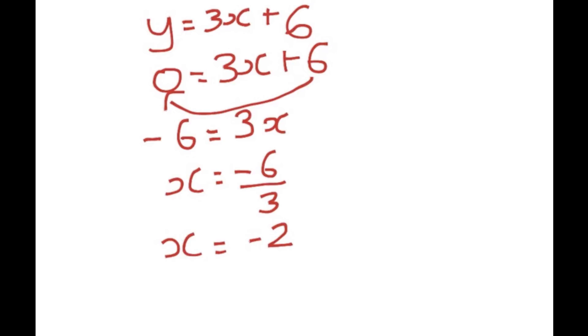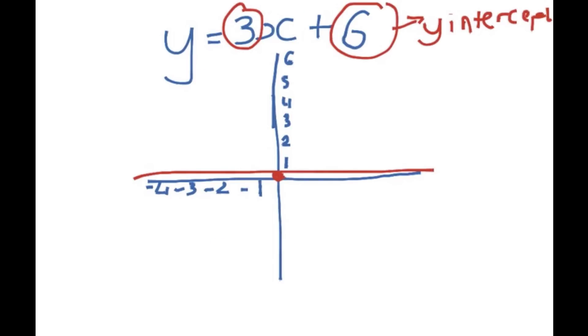Therefore, the coordinates of the x-intercept would be minus 2, 0, and we know also the coordinates of the y-intercept would be 0, 6, based on the c, which is shown right here.